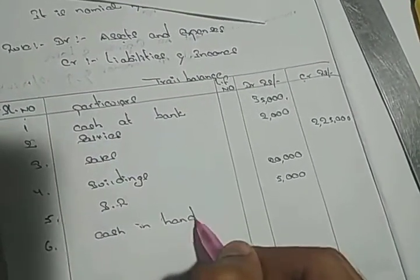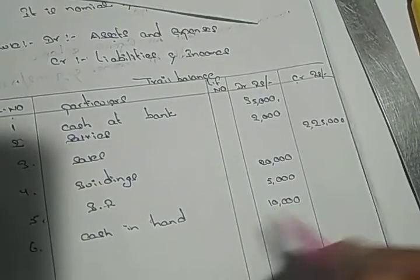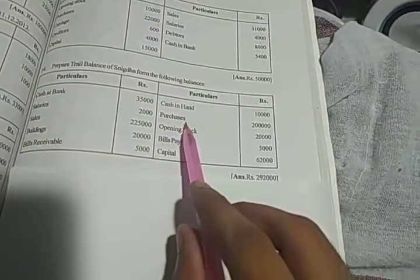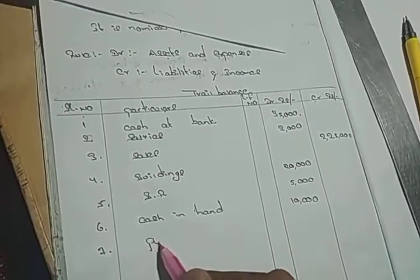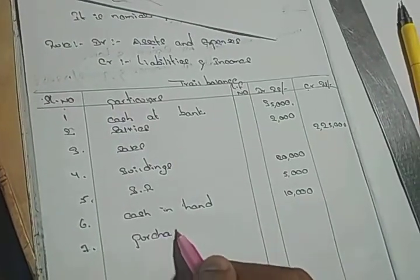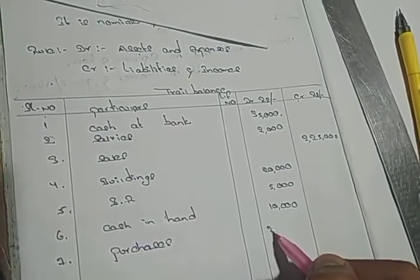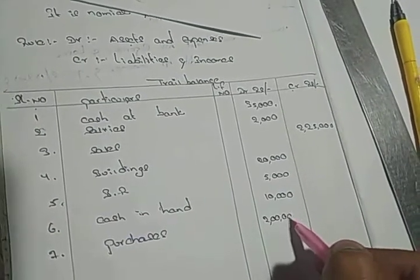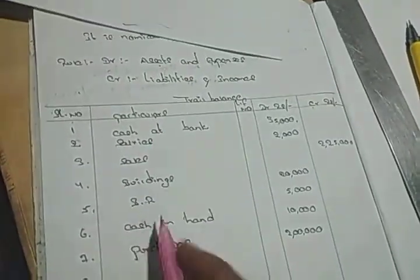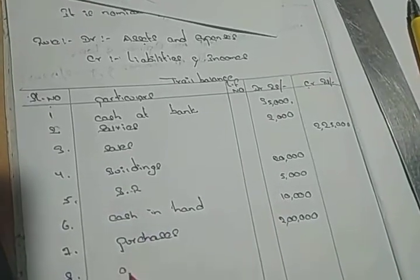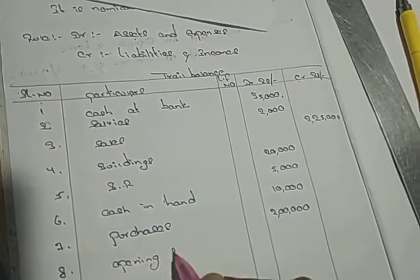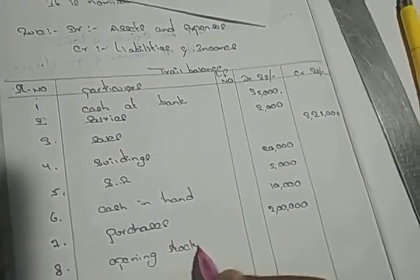Purchase: one type of expenses. Purchase rule: debit. Purchases, amount: two lakhs. Next, opening stock: one type of asset. Asset, debit. Opening stock, amount: 20,000.